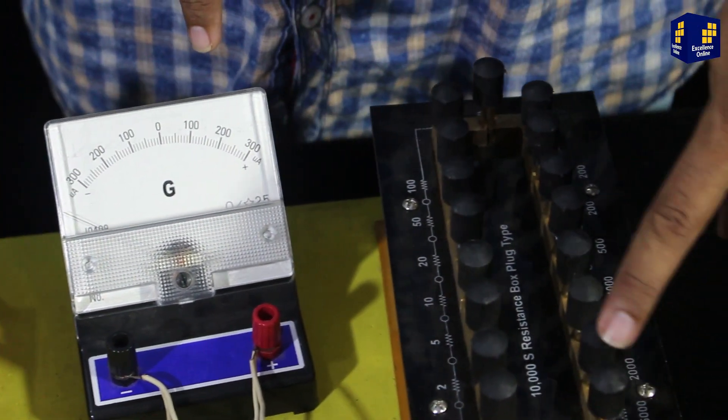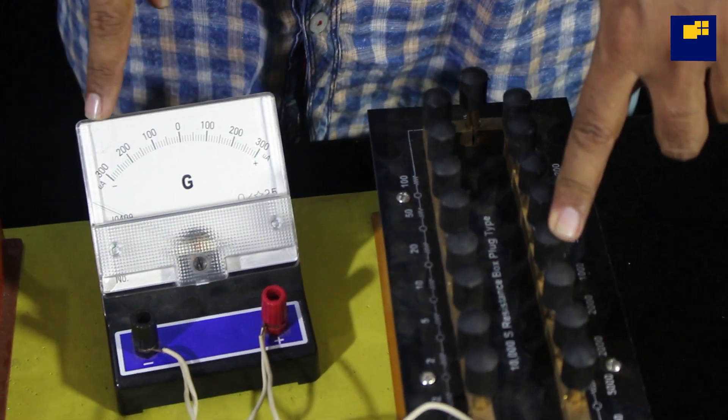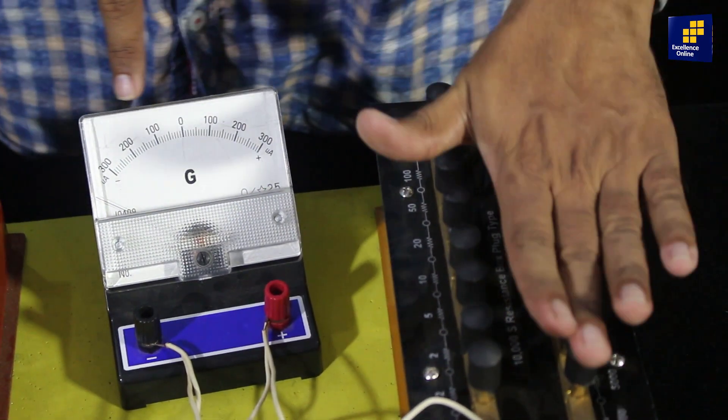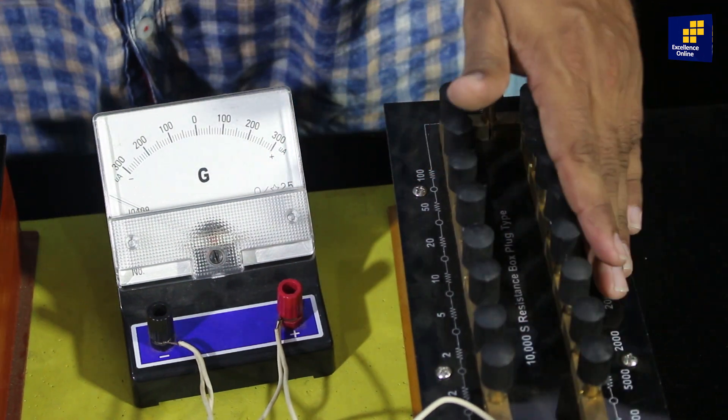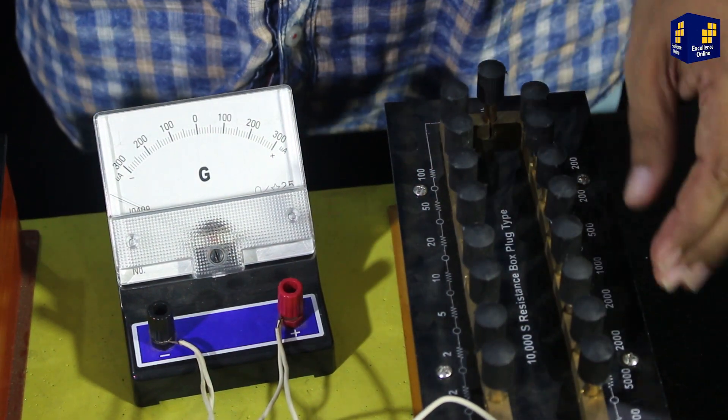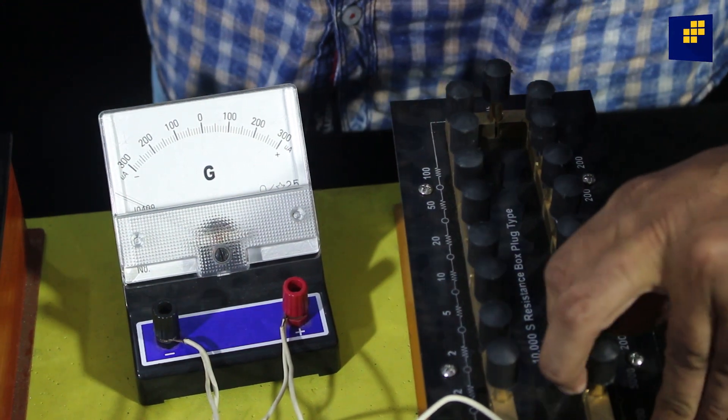अब यहाँ कुछ resistance introduce करवाएंगे, जिससे galvanometer current कम होगा, and we'll set the resistance in such a way कि जो pointer है, it comes to even number, it shows even number deflection. जैसे कि मैं इसको 30 degree पर adjust करता हूँ.